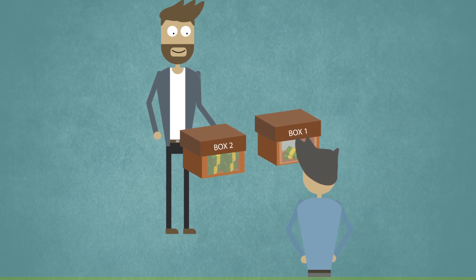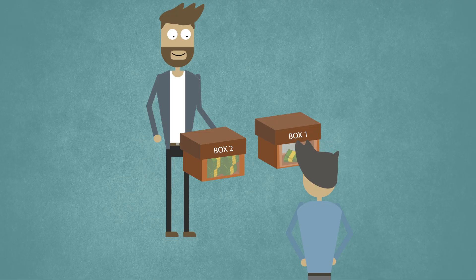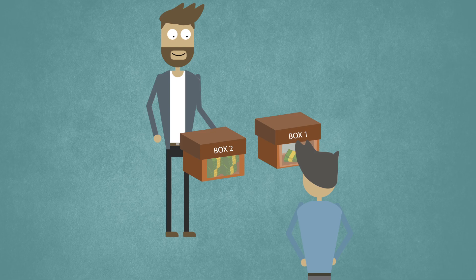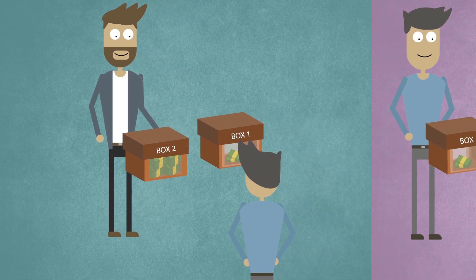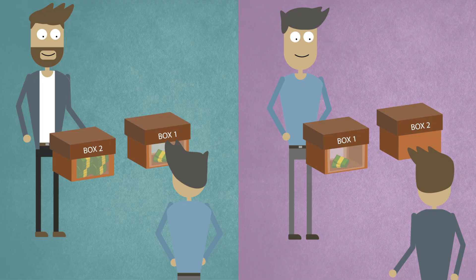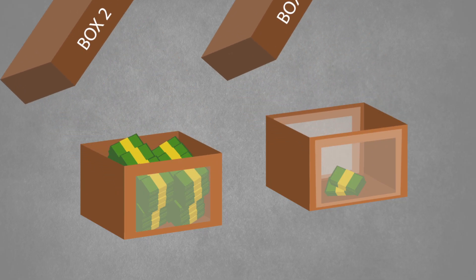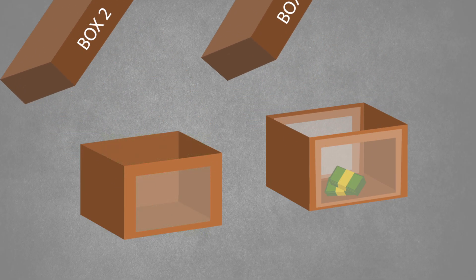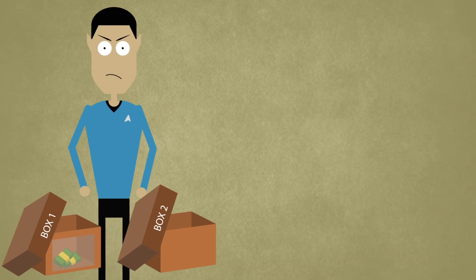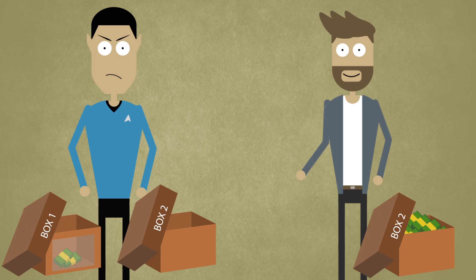Now suppose that the back of box two is transparent and from where you stand you can see what's inside both boxes. Your friend taking the experiment can still only see inside box one and the thousand pounds. Assuming you want the best for your friend, you would want him to open both boxes, regardless of what's in box two. If the million pounds is in the box, it's not suddenly going to disappear if he chooses to open both. It seems that the logical thing to do would be to open both boxes, but is that how you would actually act if given the opportunity?